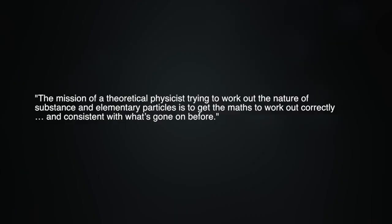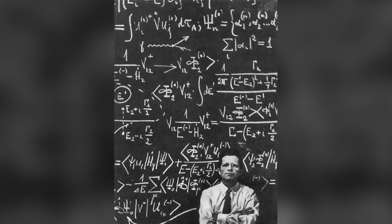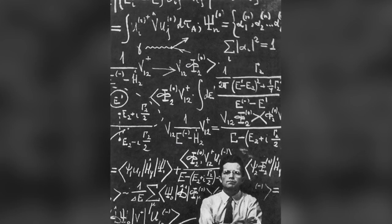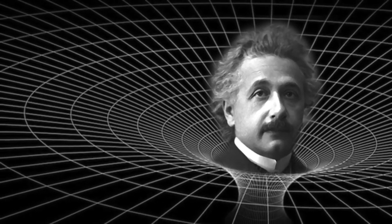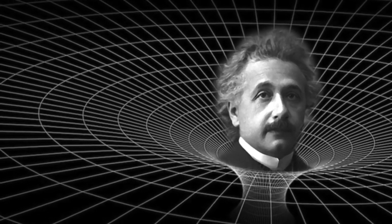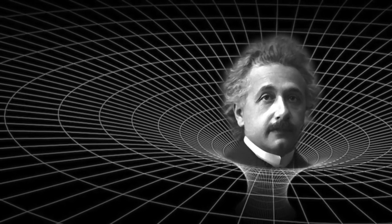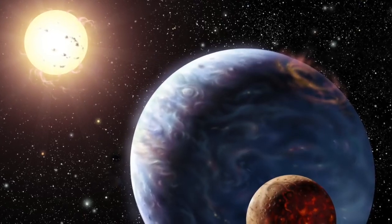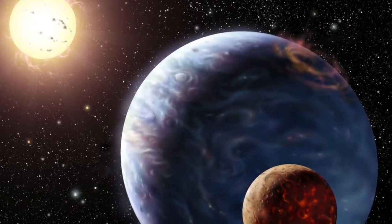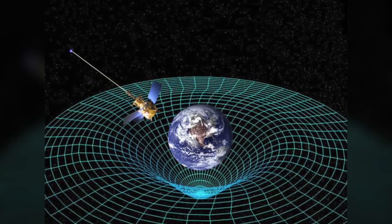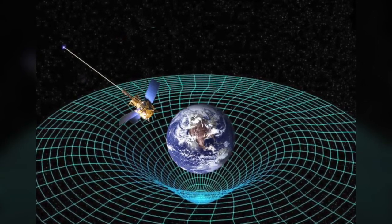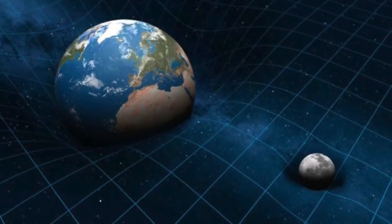He explained, the mission of a theoretical physicist trying to work out the nature of substance and elementary particles is to get the maths to work out correctly and consistent with what's gone on before. So we're discussing mathematics, not physics. And of course, what's gone on before is that mathematicians raised Einstein's general relativity to the status of scripture, while that theory ignores the substance of stars and planets that exhibit mass and gravity. So the theory has no physical basis whatsoever. It depends instead on a warped view of reality.